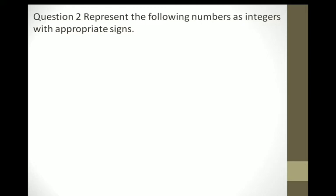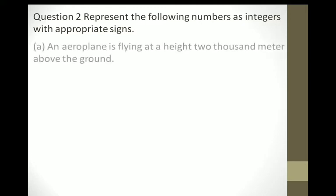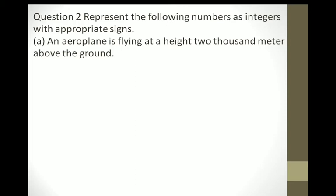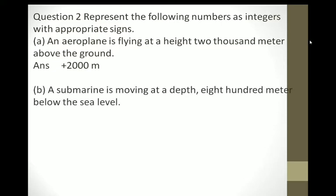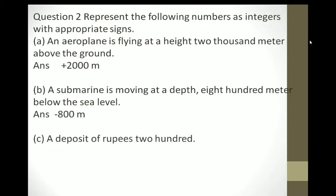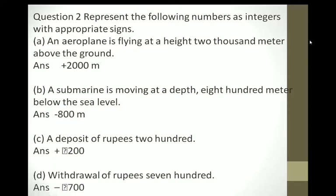Question number 2: Represent the following numbers as integers with appropriate signs. An aeroplane flying at a height of 2000 meters above the ground — that means upside, so it will be positive: +2000 meters. A submarine moving at a depth of 800 meters below sea level — that means downside, so it is negative: −800 meters. A deposit of Rs. 200 is positive: +200. A withdrawal of Rs. 700 means we are taking out, so it is negative: −700. Note: due to a technical problem, a question mark appears but we have to write the rupees sign.